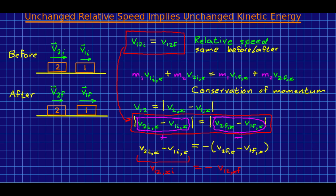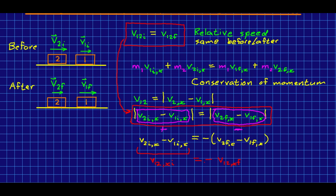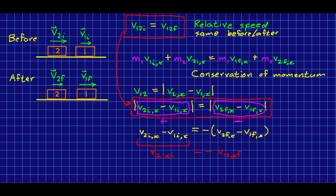Well, what this is telling us is that if the objects are coming toward each other initially, they must be going away from each other finally. Well, that makes perfect sense. As long as the objects don't pass through each other, this has to be true, that the relative velocity x component switches sign during the collision.